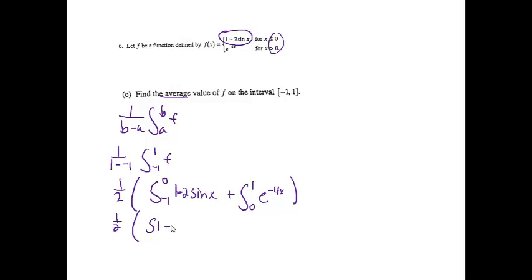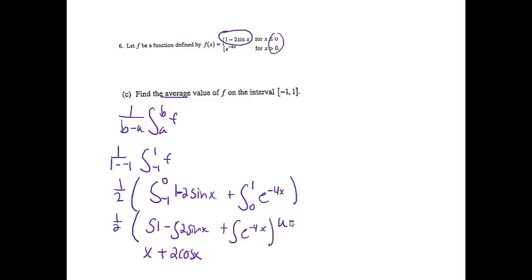Since there's a minus sign, we can take the integral of both parts separately. The integral of 1 is x, and the integral of negative 2 sine x is positive 2 cosine x. For the second integral, we do a u-substitution: let u equal negative 4x, so du equals negative 4 dx. We're missing a negative 4, so we put negative 1/4 on the outside, giving negative 1/4 times the integral of e to the u, which equals negative 1/4 e to the negative 4x.